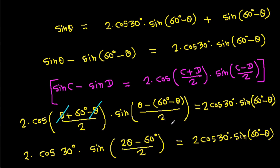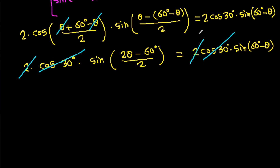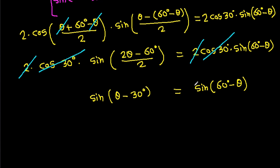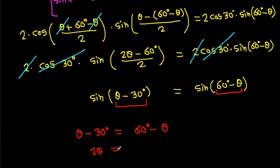After simplification, the cos 30 degree terms cancel and we get sin(theta minus 30 degrees) equals sin(60 degrees minus theta). So theta minus 30 degrees equals 60 degrees minus theta, giving 2 theta equals 90 degrees, that means theta equals 45 degrees.